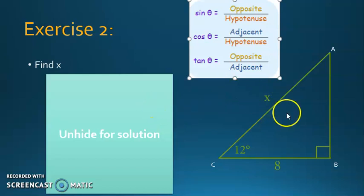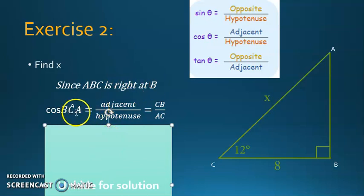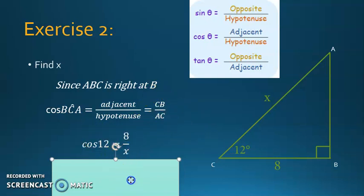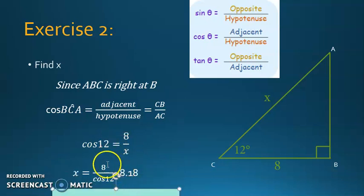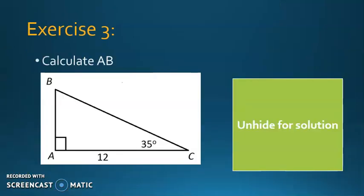Since ABC is right at B, cosine BCA equals adjacent over hypotenuse, so it's CB over AC. Replace cosine BCA with cosine 12, CB with 8, and AC with X. Do cross multiplication — you'll get X equals 8 over cosine 12. Using your calculator, press 8 over cosine 12 and you'll get 8.18.